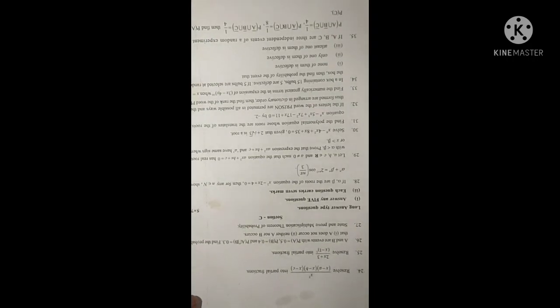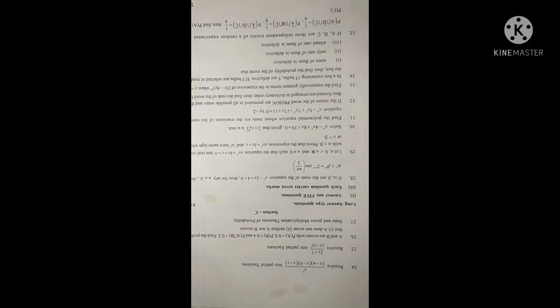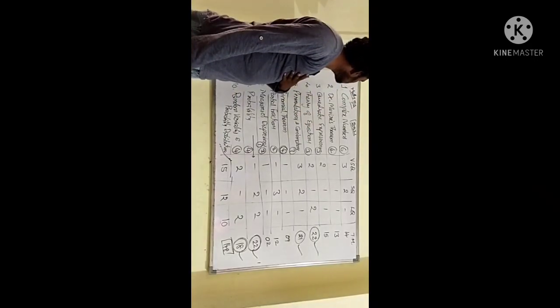Now we can see the blueprint, meaning chapter-wise weight of marks. This is the first page. If it is appearing clearly, then take a screenshot. Second page from ninth question onwards to 23rd questions. Next, 24 to 35.